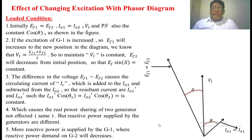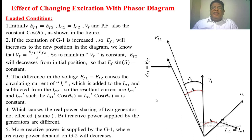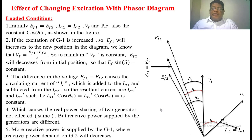Whenever we increase the excitation of the first generator, EF1 will increase. That new phasor is taken as EF1 dash, shown with a dotted line. We know that the terminal voltage equals EF1 plus EF2. When EF1 increases to EF1 dash, EF2 must change to maintain the terminal voltage as constant — shown as EF2 dash. So there is a difference between EF1 dash and EF2 dash, and this resultant voltage will be experienced in the loop of the two parallel alternators.